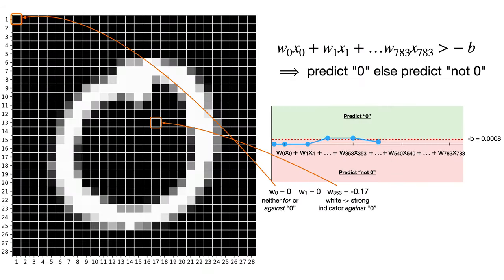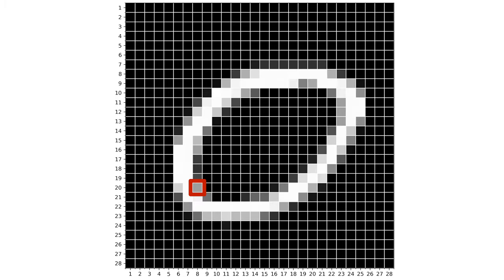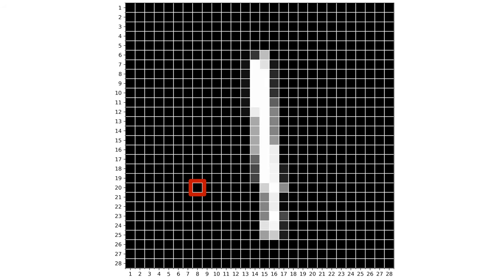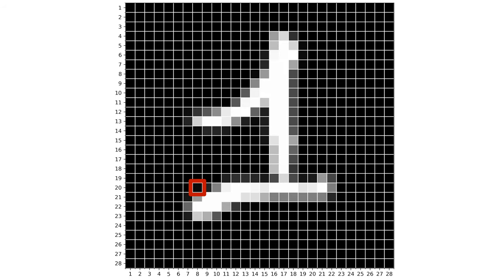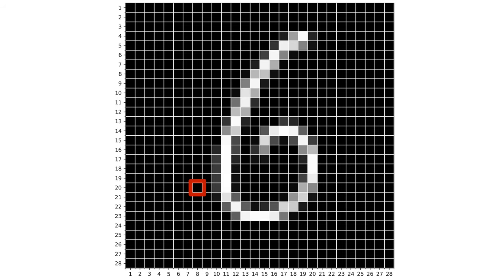Now let's check out pixel 540. The associated weight here is 0.09, the highest positive weight in the model. So anytime an image has a bright white value here, it's strong evidence for a zero. Looking at some examples, you can see it lies here, a common place for zeros, but not so common for other digits.